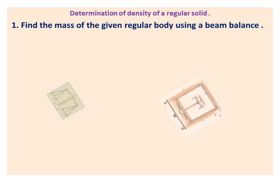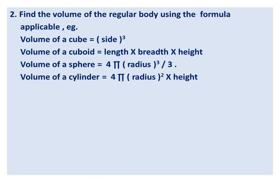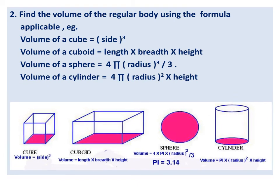Determination of density of a regular solid. Step 1: Find the mass of the given regular body using a beam balance. Step 2: Find the volume of the regular body using the formula applicable. For example, volume of a cube is equal to side cubed; volume of a cuboid is equal to length multiplied by breadth multiplied by height; volume of a sphere is equal to 4 pi radius cube divided by 3.